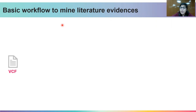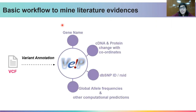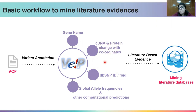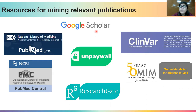You get a VCF file containing the list of variants, and you use that file to annotate the variations using a tool such as VEP. Further, you use the gene name of the variations, together with the cDNA and protein change with coordinates or the RSID, to mine through the appropriate literature so as to assign relevant attributes to your variation. There are many freely available databases to retrieve relevant papers pertaining to the variant of interest.